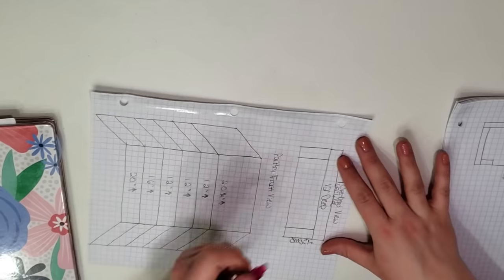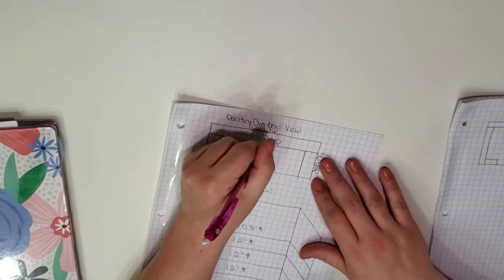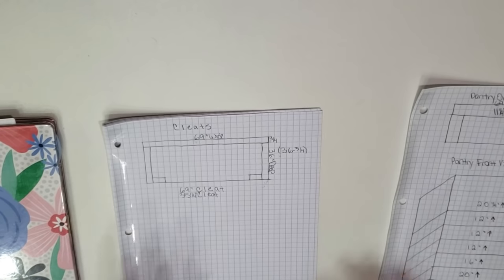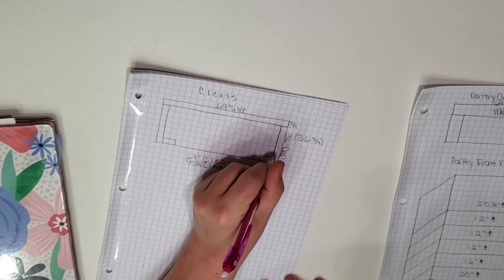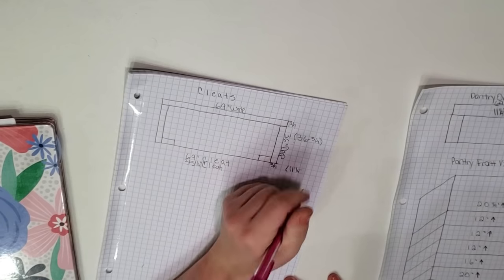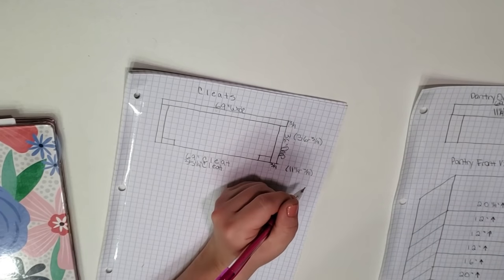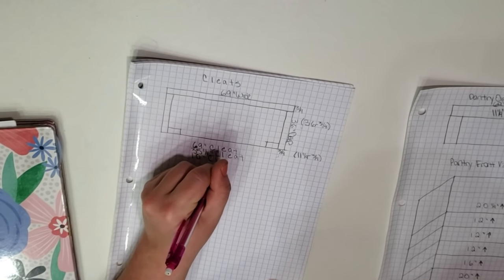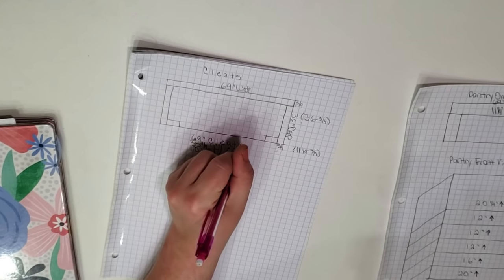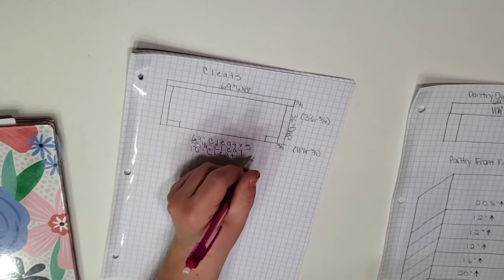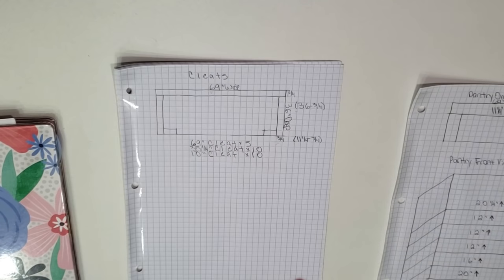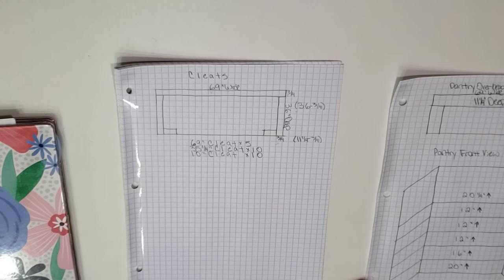At this point I decided to change the shelf depth to 11 and a quarter inches deep, which will make sense in a minute. So my last cleats on the wall which are on that inner wall where the door is need to not stick out any further than the edge of my shelf. If the shelf is 11 and a quarter inches deep and I subtract the thickness of the cleat that's on that wall that it's going to run into, that would make it 10 and a half inches. I decided to just go with 10 inches so that cleat will stop about a half of an inch before the edge of the shelf.